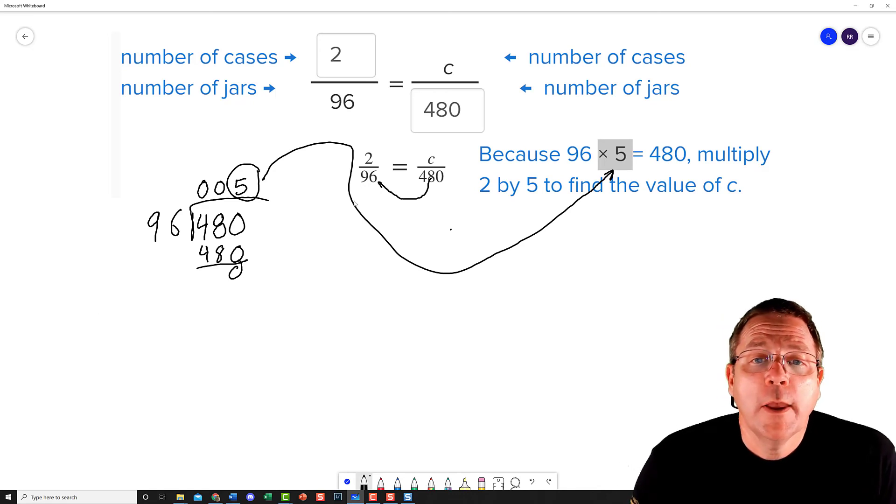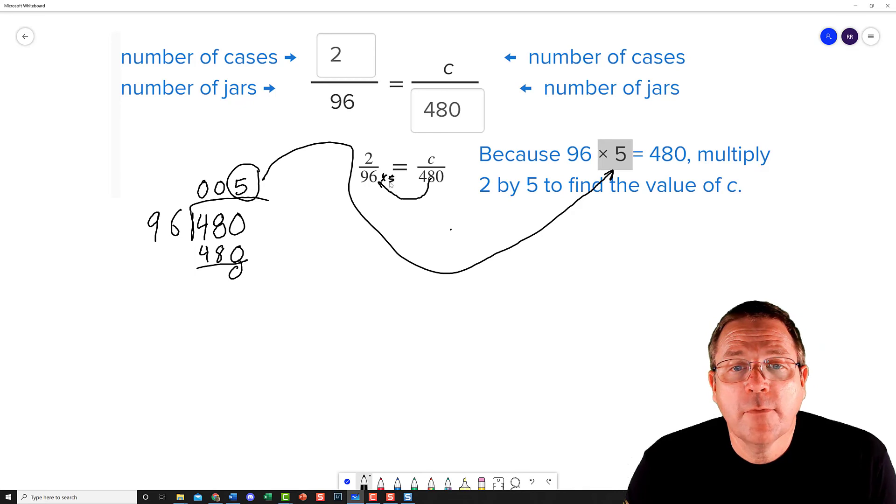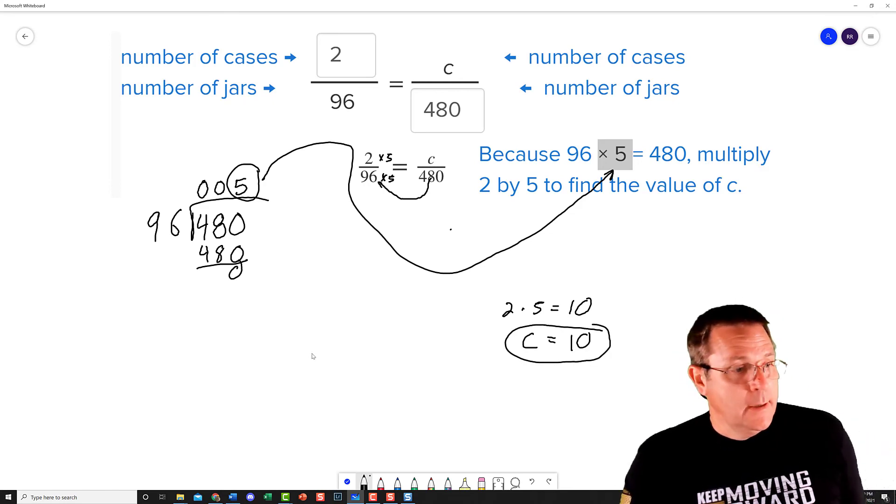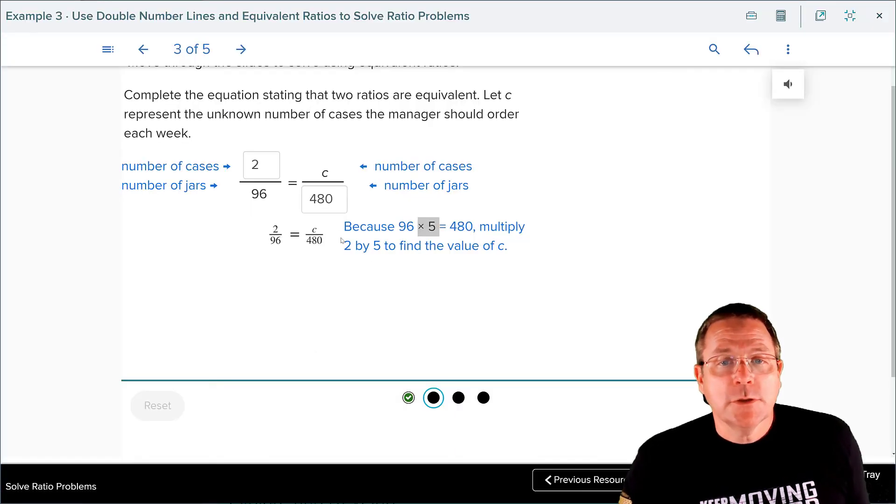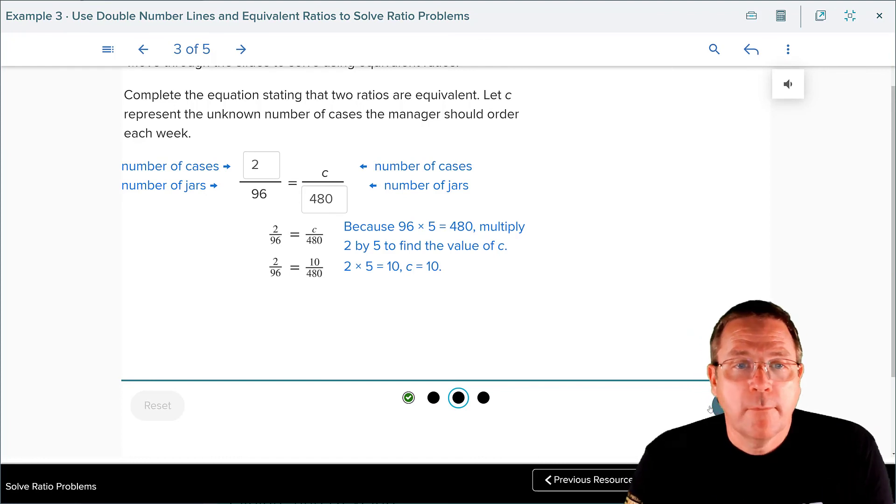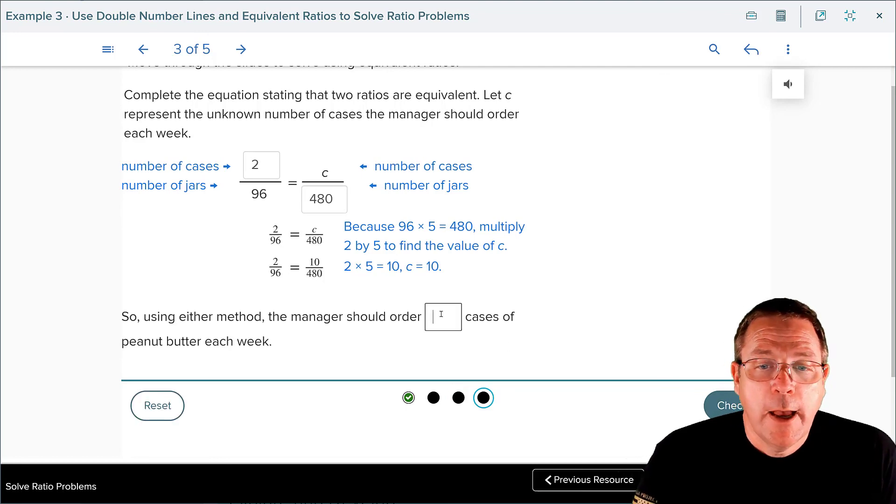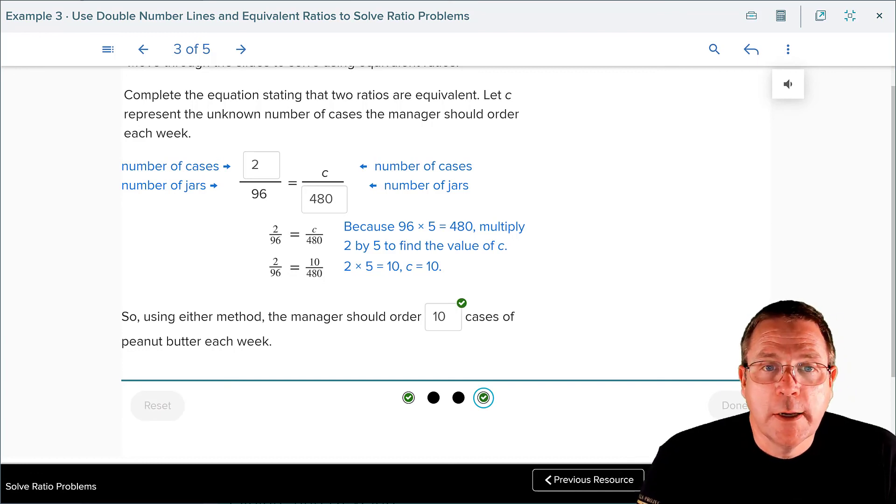Now, all you have to do, since 96 times 5 equaled 480, we can say that 2 times 5 is going to equal C. So, what is 2 times 5 going to equal? 2 times 5 is equal to 10. Therefore, C, the number of cases needed, is also going to equal 10. We're going to go back to our slideshow. They have 2 times 5 is equal to 10. So, C equals 10. How many cases should that manager order? 10 cases. Check it. Boom. You are done. Easy math. Kinda.